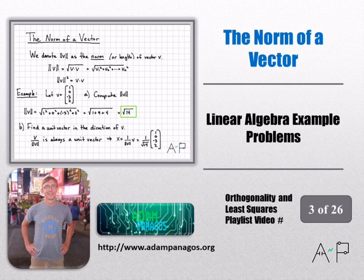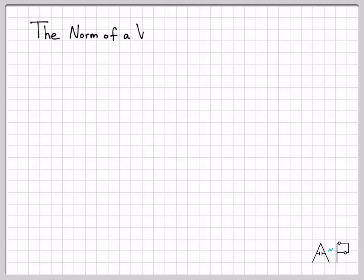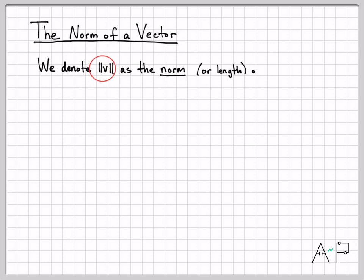Now that we've defined the dot product of a vector, we can define what we call the norm of the vector. The norm of a vector is really just the length of the vector. We use this notation right here, these double vertical bars around vector v to indicate the norm of the vector. It is really just the length.